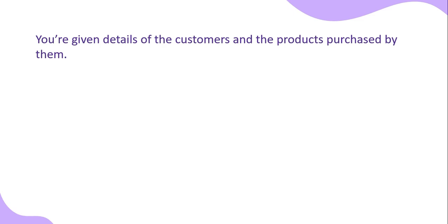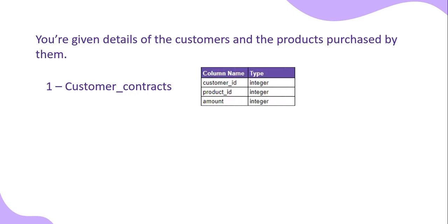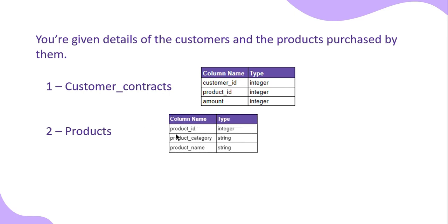You are given two different tables. The first is the customer contracts table, which contains records of each customer's purchase details including the customer ID, product ID, and amount. The second table is the products table, which provides information about each product including product ID, product category, and product name.